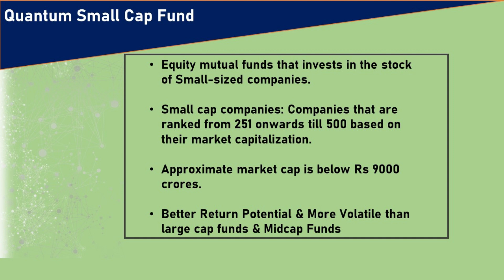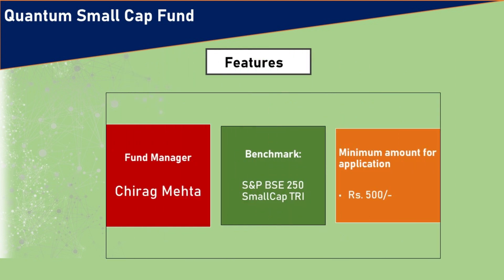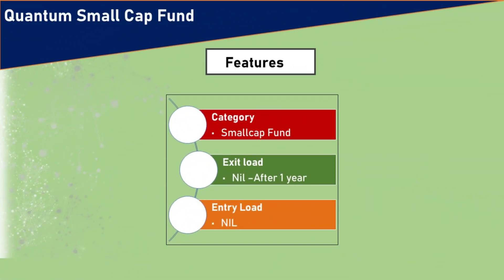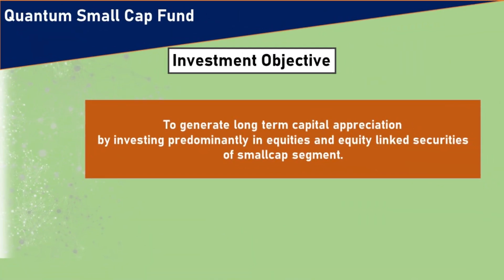So higher risk and higher return potential. The fund manager of Quantum Small Cap Fund is Chirag Meta, and the benchmark index is the S&P BSE 250 Small Cap Total Return Index. The minimum application amount is just rupees 500. This fund falls under the equity fund category, with 80% of money invested in small cap stocks (ranks 251 to 500), while the remaining 20% can be invested based on the fund manager's outlook. Exit load applies within one year; after one year there is no exit load, and there is no entry load.